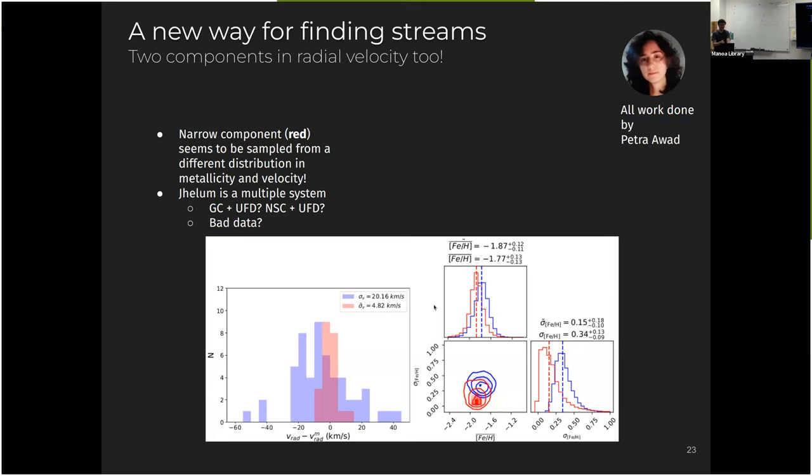So one way of disentangling if it's a globular cluster or dwarf galaxy is to measure not only the velocity dispersion, but also the metallicity dispersion. So ultra-faint dwarfs or any dwarf galaxies will have a metallicity spread while globular clusters universally don't have.